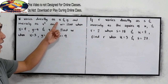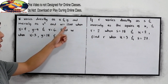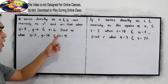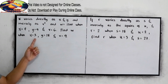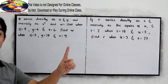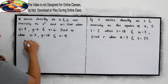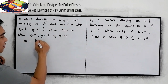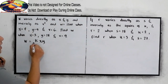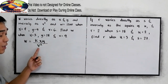Next example. W varies directly as x and y, and inversely as v squared. And w is equal to 1,200 when x is equal to 4, y is equal to 9, and v is equal to 6. Find w when x is equal to 3, y is equal to 18, and v is equal to 9. Our first step: find the equation of variation. W varies directly as x and y, and inversely as v squared. This is now our equation.